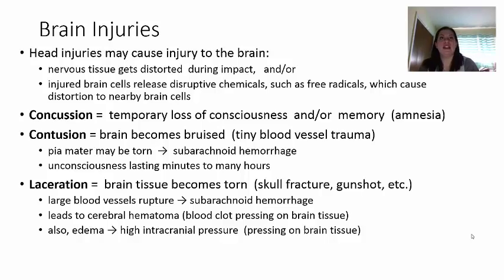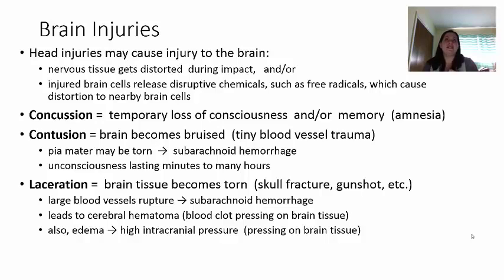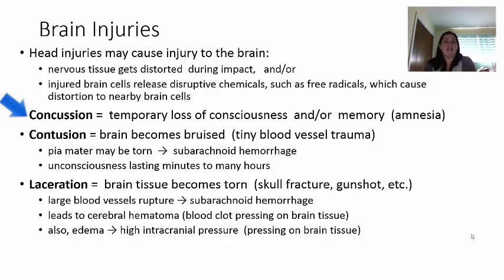Now let's talk about brain injuries. When head injuries occur and the brain is involved, nervous tissue can get damaged during the impact. This can cause brain cells to start releasing certain chemicals that could be disruptive — like free radicals that damage the DNA of surrounding brain tissue. So it's not necessarily just trauma from the impact; it could also be injured cells releasing chemicals. The lowest level is a concussion — a temporary loss of consciousness and/or memory, which is amnesia. This could last just a couple of seconds or a couple of minutes.